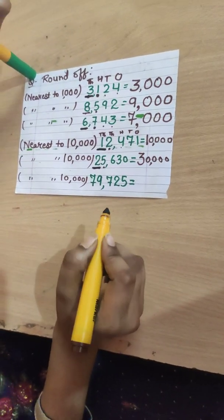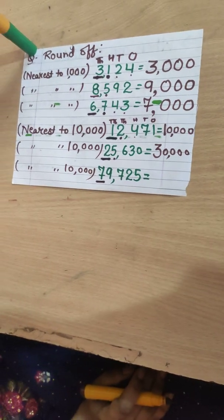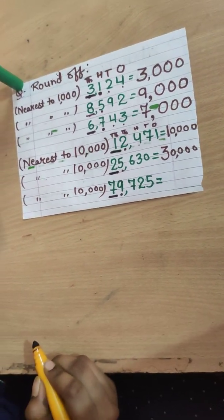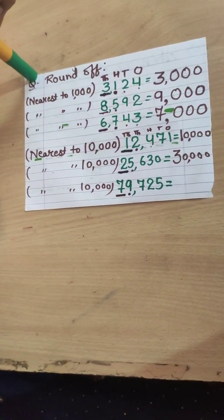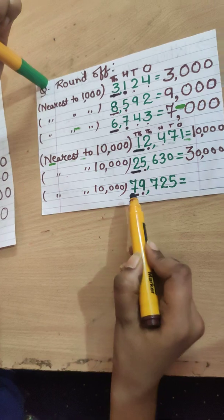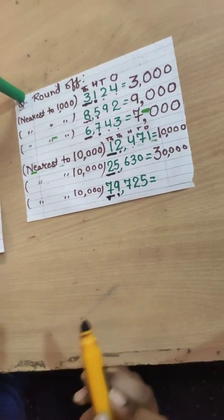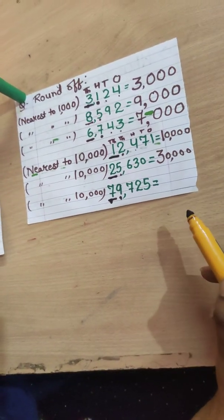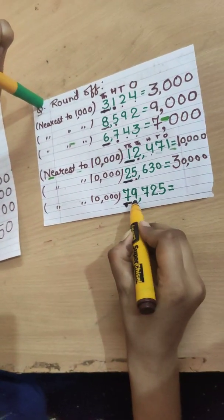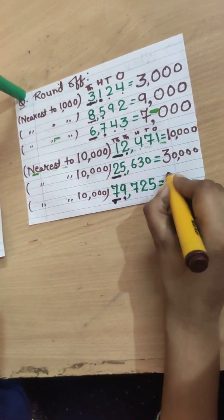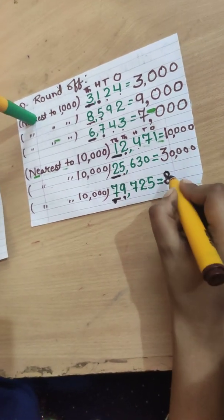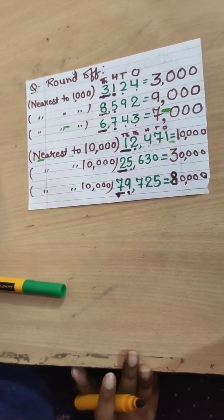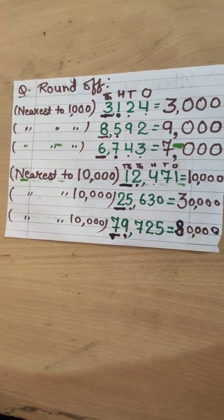For 79,725 rounded to the nearest ten thousand: 7 is at the ten-thousands place and its previous digit is 9, which is greater than 5. So 7 becomes one step greater — 7 becomes 8 — and the rest become 0, giving four zeros. The answer is 80,000.